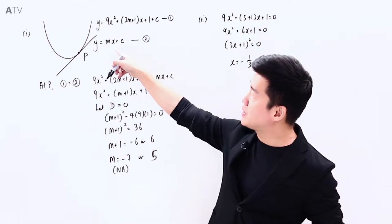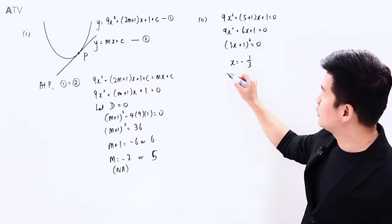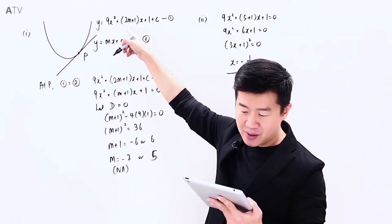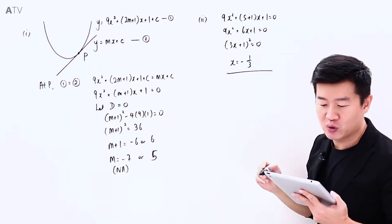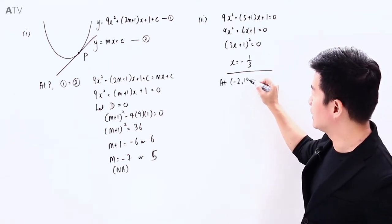We will substitute it back into this equation here to find the corresponding y-coordinate. To do that, we must first solve for C. Since the question says that this curve passes through the point (-2, 19), at (-2, 19)...